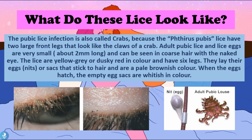So what do these lice look like? The pubic lice infection is also called crabs because the Pthirus pubis lice have two large front legs that look like the claws of a crab. The adult pubic lice and lice eggs are very small — about two millimeters long — and can be seen in the coarse hair with the naked eye. The lice are yellow-gray or dusky red in color and each have six legs. They lay their eggs in nits or sacks that stick to the hair and are a pale brownish color. When the eggs hatch, the empty egg sacks turn whitish in color.